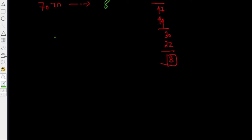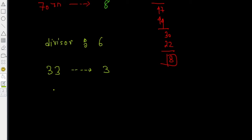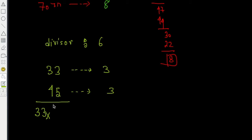Let's take a third example. This time our divisor is 6. Let's take two numbers: 33, which gives remainder 3 when divided by 6, and 45, which also gives remainder 3. Now, before we compute, let's try to figure out what the remainder would be when 33 times 45 is divided by 6.